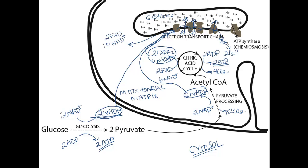By passing these electrons and harvesting their potential energy to pump protons into this space, the electron transport chain has built up a strong proton gradient — many more protons in the cristae than in the matrix. Because of that, these protons can flow down their electrochemical gradient through ATP synthase, turning a crank that allows ATP synthase to produce ATP. For each glucose molecule, this process can generate about 25 ATP — a huge amount compared to the earlier steps. This is where we harvest most of our ATP.